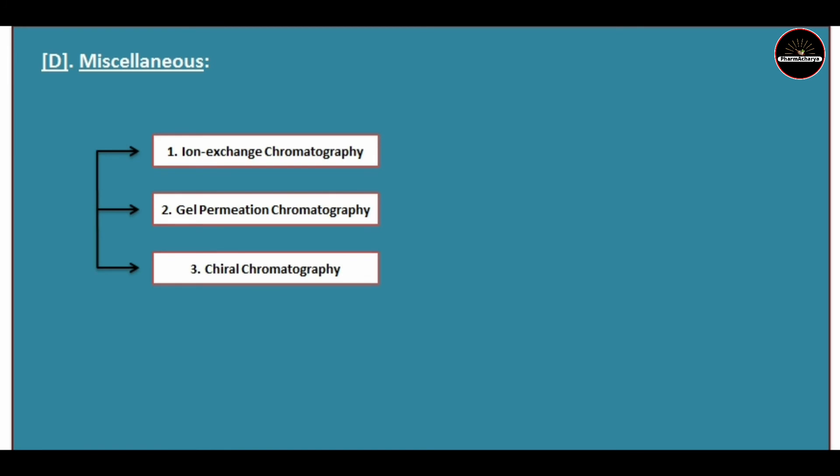Furthermore, there are three additional types of chromatography: ion exchange chromatography, gel permeation chromatography, and chiral chromatography, which will be discussed in further parts of this series in detail.